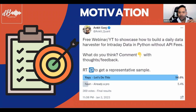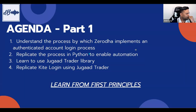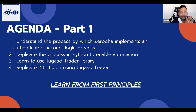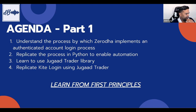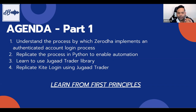Today's agenda: we'll go through the Zerodha Kite login process and understand how they implement the two-step login — first username and password, then a TOTP. We'll understand how it's fundamentally built and then replicate that process in Python automation. We're taking Zerodha as an example, but most brokers run in a similar fashion, so any web-based login could be replicated with this approach.